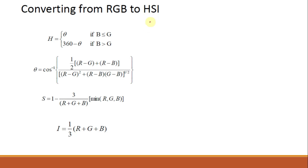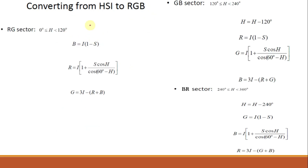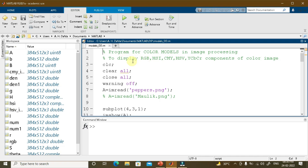This slide shows the mathematical steps for conversion from RGB to HSI, which we will also see in MATLAB. The next slide shows conversion from HSI to RGB. The conversion is based on three sectors: the RG sector, GB sector, and BR sector. If you observe the equations, you can see that the position of R, G, and B only changes for different sectors — the equations are the same — and hence they can be remembered easily.